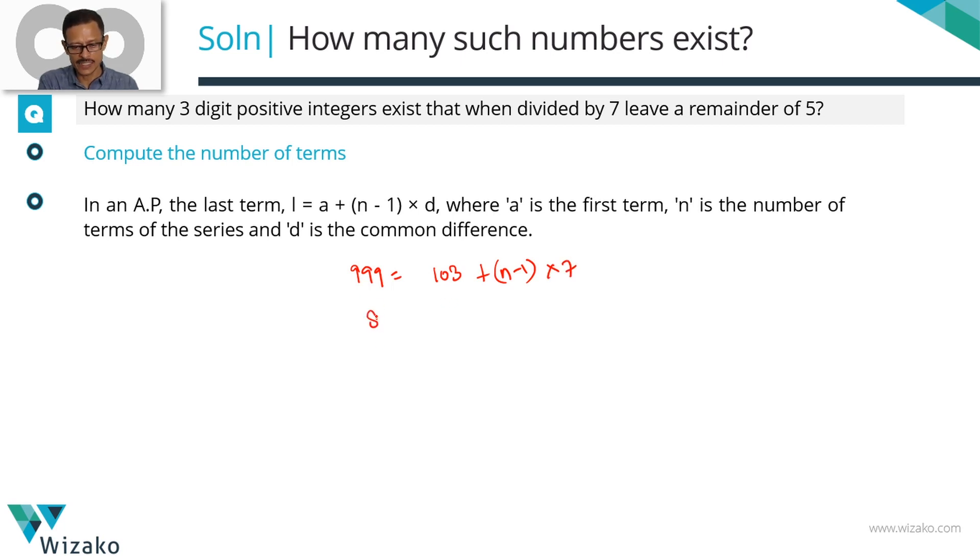Take this 103 to the left hand side, you'll get 896 equals n minus 1 times 7. Divide both sides of the equation by 7. 896 divided by 7 will leave you with 128 as quotient. This equals n minus 1. If n minus 1 equals 128, n is equal to 129.